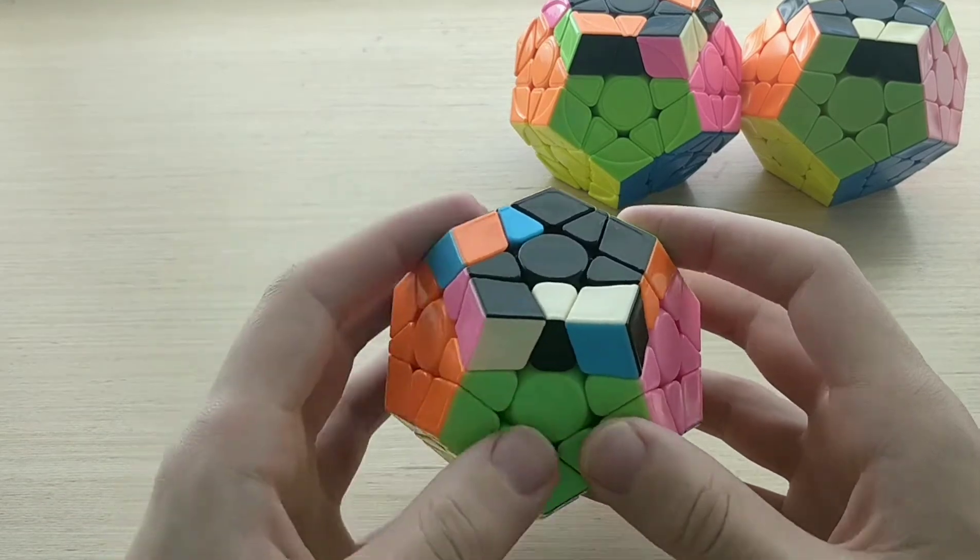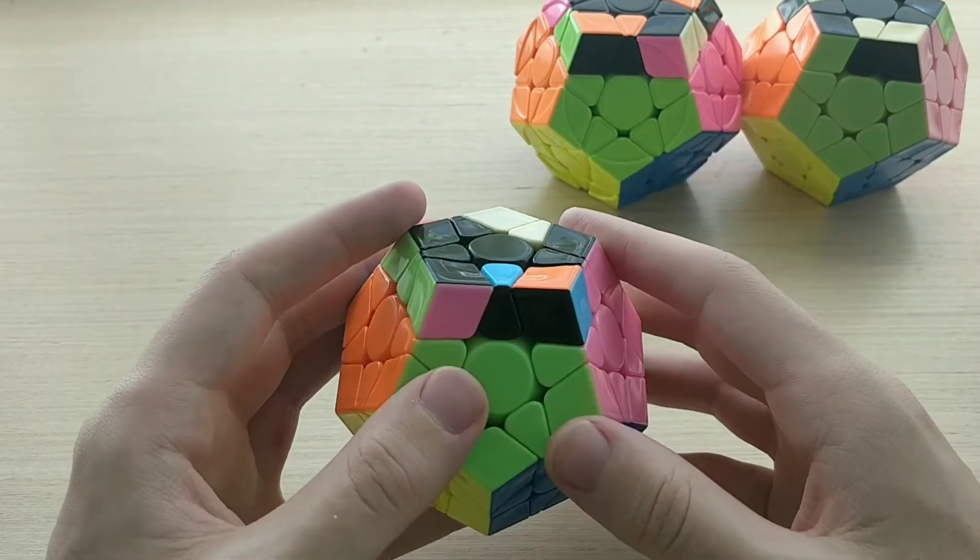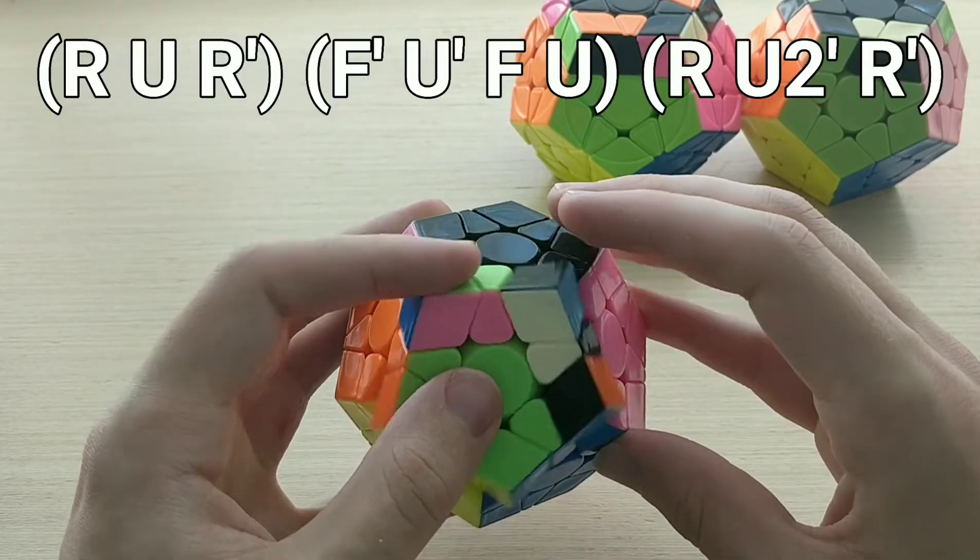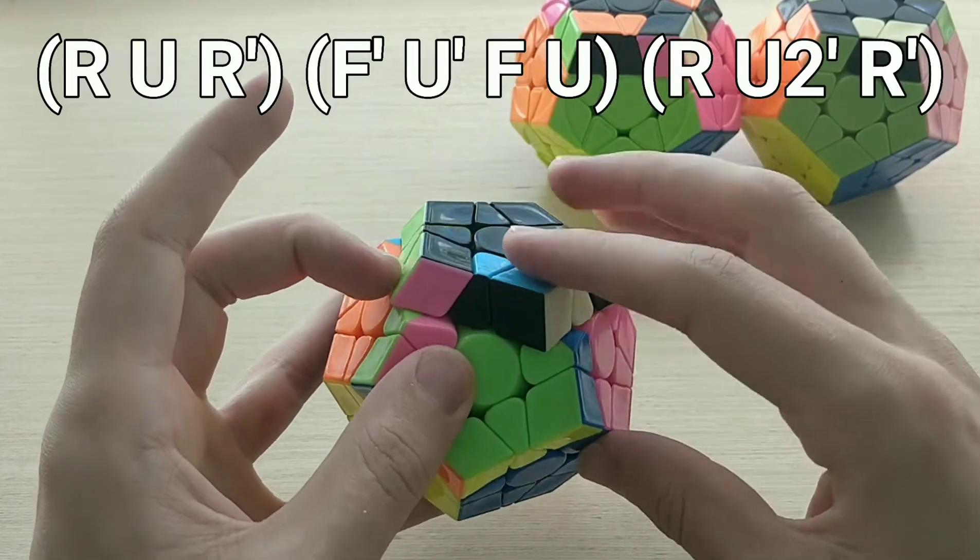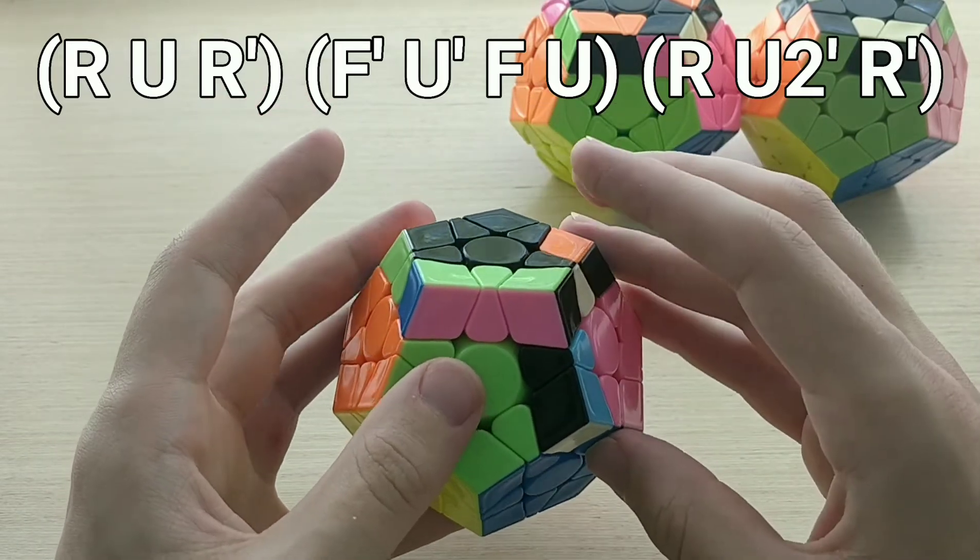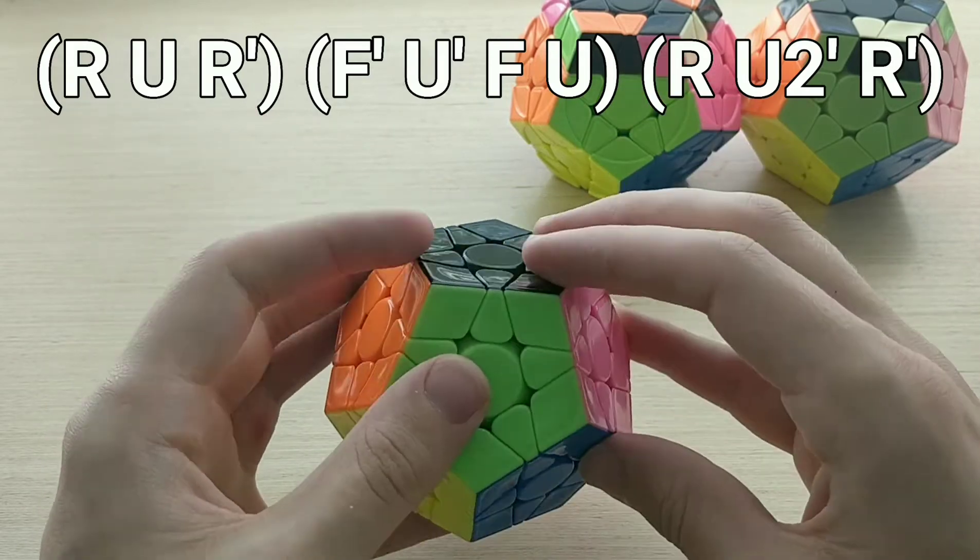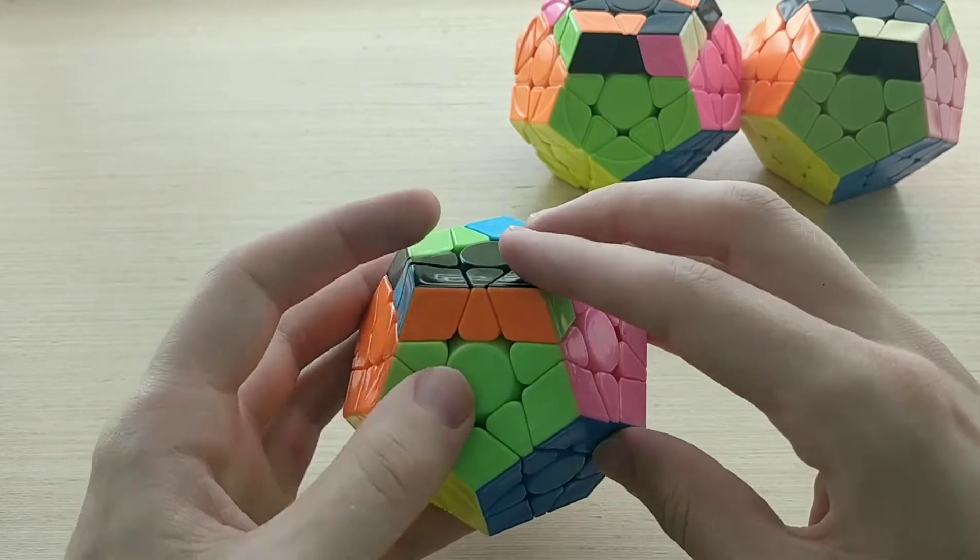For the second one, 9a minus, we're going to do the alg that we do from the back here, which looks like this. r u r', f' u' f, so just that pull with our middle finger, and then drag this with our ring finger, r u2' r', so like that.